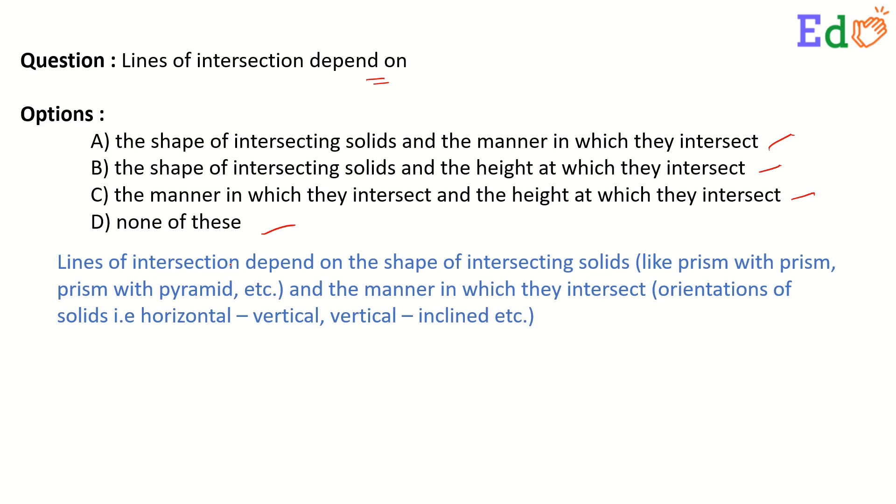Lines of intersection depend on the shape of intersecting solids (like prism with prism, prism with pyramid) and the manner in which they intersect, that is, the orientation of solids—horizontal with vertical, vertical with inclined, etc.